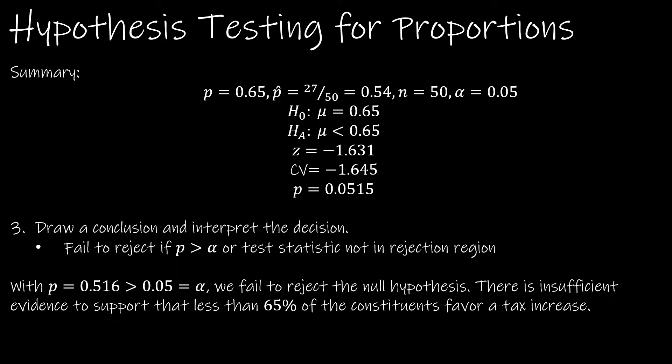So draw our conclusion. We fail to reject if p is greater than alpha, or the test statistic is not in the rejection region. With p greater than alpha, we fail to reject the null hypothesis. There's insufficient evidence to support that less than 65% of the constituents favor a tax increase.